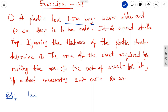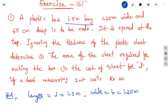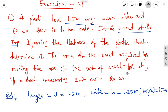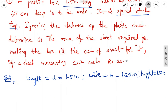Length L = 1.5 m, breadth B = 1.25 m, and height (deep) H = 65 cm. The box is open at the top, so the top sheet is not considered — only the bottom and four side walls are included. Ignoring the thickness of the plastic sheet, determine the area of the sheet required for making the box.